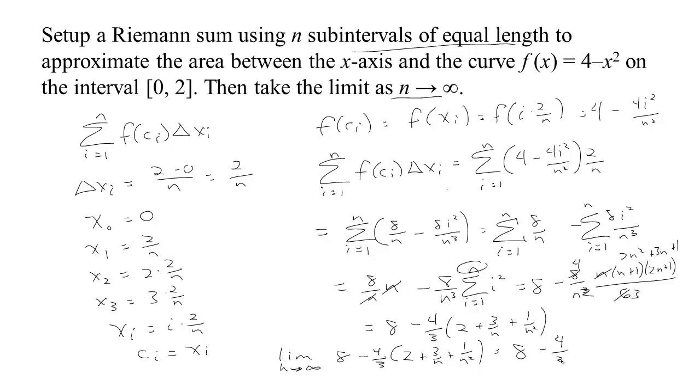So we're basically left with minus 4/3 times just 2, or that would be 8 minus 8/3. If you get a common denominator, that's 24/3 minus 8/3, which is 16/3. We found our answer.